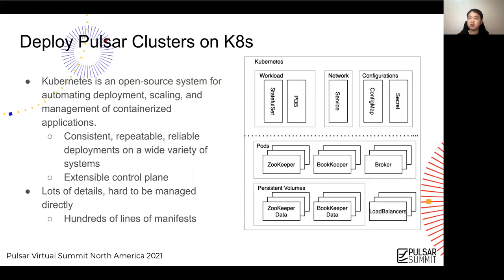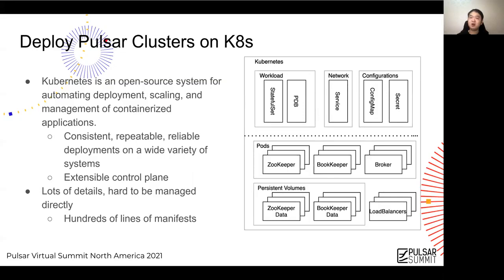Kubernetes also provides an extensible control plane, which makes it easy to support fine-grained, customized orchestration over customer resources. These features and the great community around it make it a de facto system for automating deployment, scaling, and management of containerized applications. On Kubernetes, the workloads of Pulsar clusters actually run in pods.